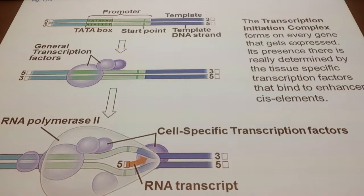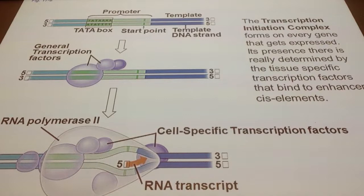When RNA polymerase 2 and all the transcription factors bind, you have transcription — the whole thing is called the transcription initiation complex. Remember DNA replication, transcription, translation — all have three different stages: initiation, elongation, and termination. Everything up to now is the initiation of transcription. As soon as RNA polymerase starts synthesizing RNA, we enter the elongation stage, and we're not really going to talk much about it.